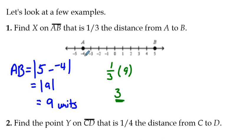So coordinate A has coordinate negative 4. Add a third of 9, which is 3, and you get negative 1. So point X is at negative 1. And we can put it on the number line here. That's one type of problem.